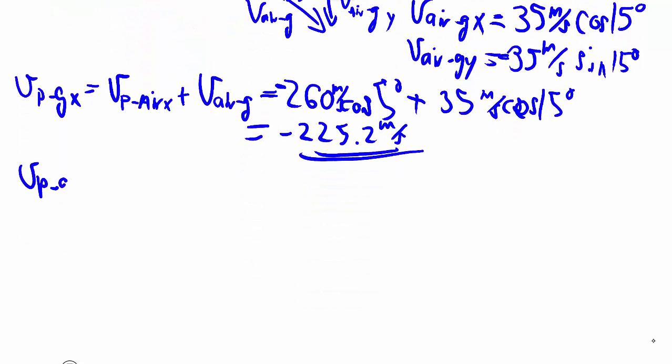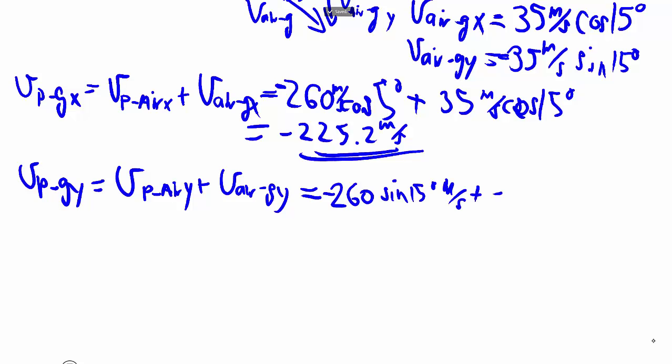And again, we do the y, negative 260 sine meters per second, plus another negative because they are both going south. Calculator, degree mode, negative 31.7186 meters per second.